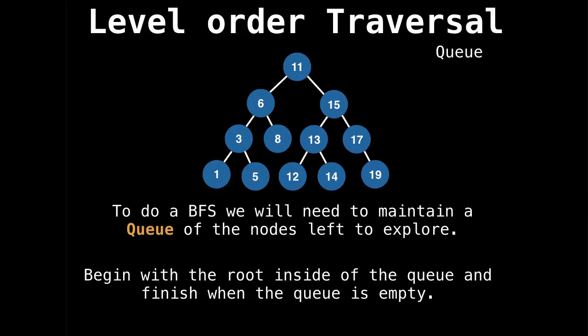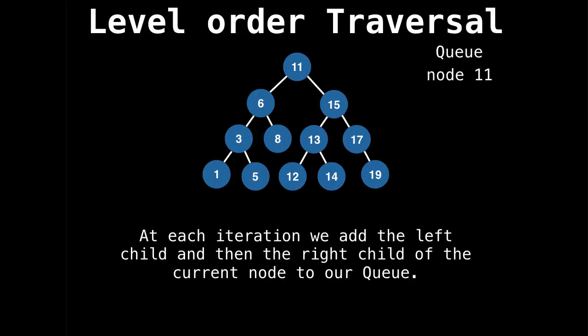So what we're going to do to do our breadth-first search is we're going to maintain a queue of the nodes we have left to explore. And how this is going to work is our queue is originally going to contain only the root node. And we're going to keep processing by pulling out the first value in our queue until our queue is over. So here you can see the queue on the right, I've inserted node 11. And so I would pull out node 11 and I would add 11's left child and 11's right child to the queue. So they would go at the end of the queue. And I've also removed 11. So the next node's process would be 6 followed by 15.